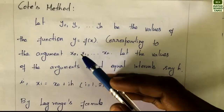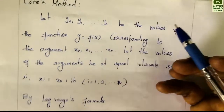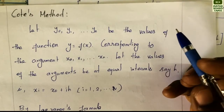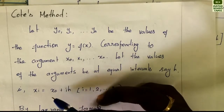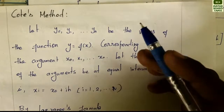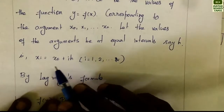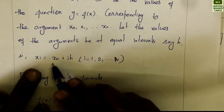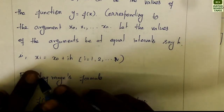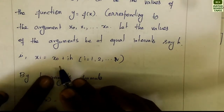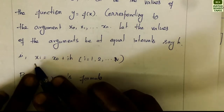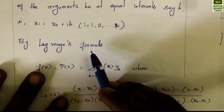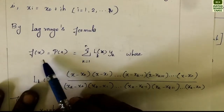So y0, y1, etc., yn are the values of the function y = f(x) corresponding to the values x0, x1, etc., xn. Here x0 is defined for the function y(x), x1 is defined as x1, and x2 = x0 + ih. If we fix the value of i, then x1 = x0 + h and x2 = x0 + 2h, and so on for all values.